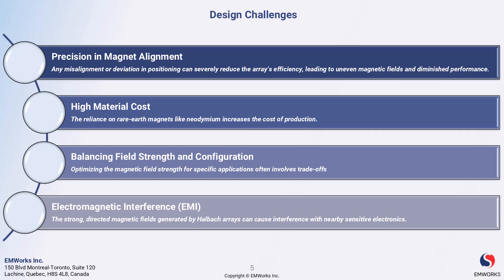When optimizing the magnetic field strength for specific applications, designers often face trade-offs. It's important to find the right balance between the desired field strength and the array's physical configuration, which can complicate the design process. Lastly, we need to consider electromagnetic interference.